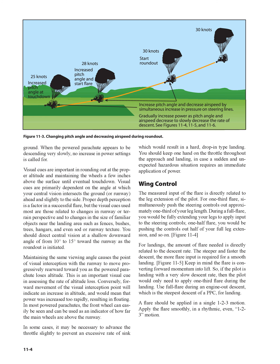Visual cues are important in rounding out at the proper altitude and maintaining the wheels a few inches above the surface until eventual touchdown. Visual cues are primarily dependent on the angle at which your central vision intersects the ground or runway ahead and slightly to the side. Proper depth perception is a factor in a successful flare, but the visual cues used most are those related to changes in runway or terrain perspective and to changes in the size of familiar objects near the landing area, such as fences, bushes, trees, hangars, and even sod or runway texture.